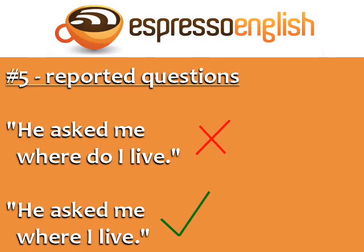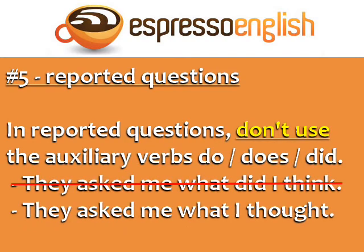Number five: reported questions. 'He asked me where do I live' is incorrect. The correct sentence is 'he asked me where I live.' This sentence is an example of a reported question — we are talking about a question someone asked in the past. In reported questions, don't use the auxiliary verbs do, does, or did. Here's another example: 'They asked me what did I think' is incorrect. The correct sentence is 'they asked me what I thought.'